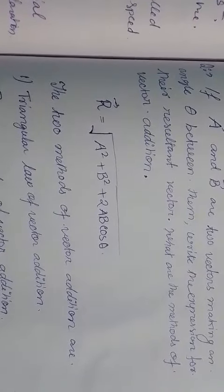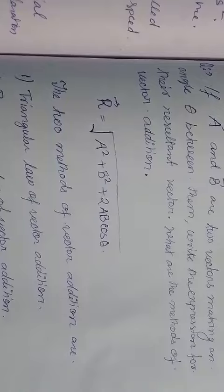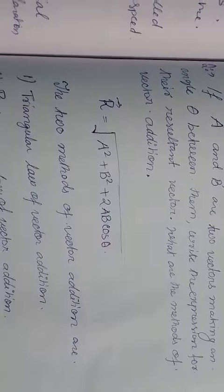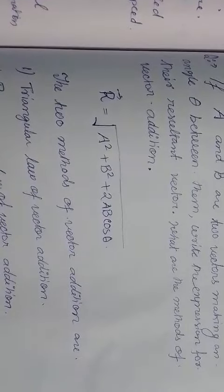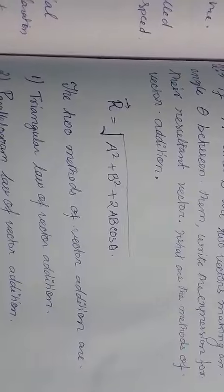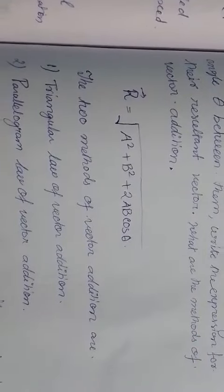R vector will be equal to root of a square plus b square plus twice a b cos theta. It is the resultant.